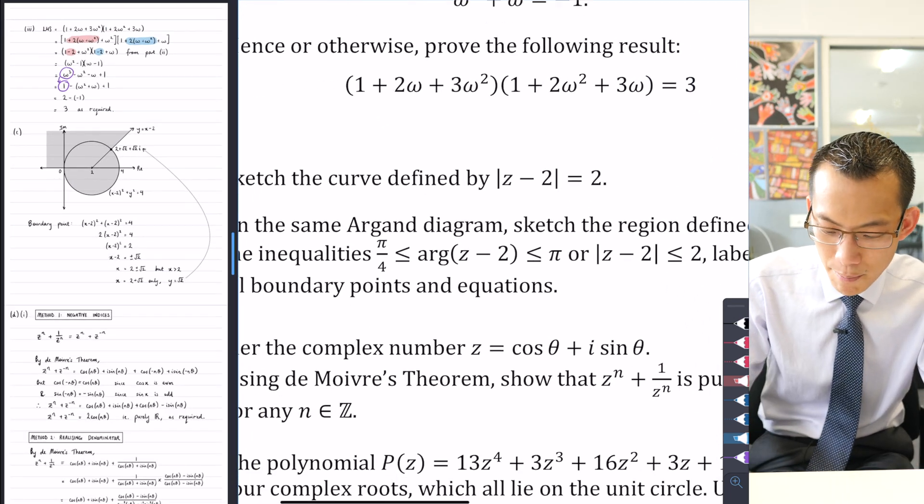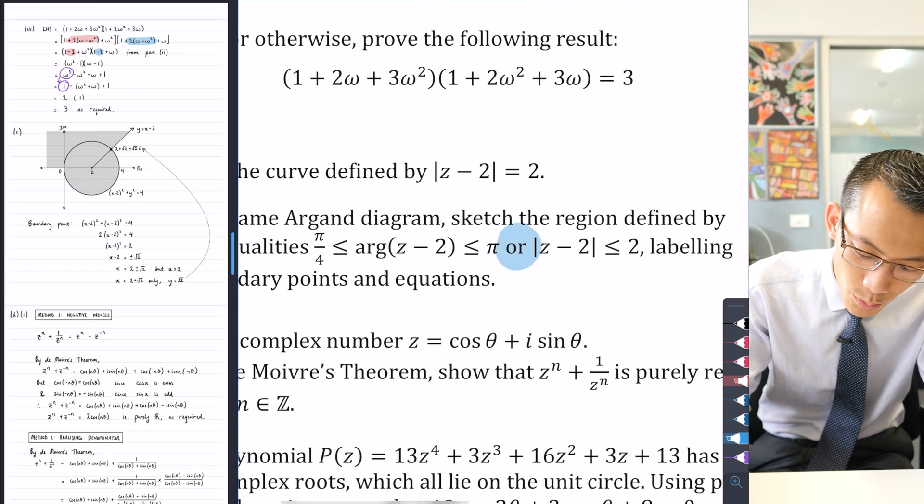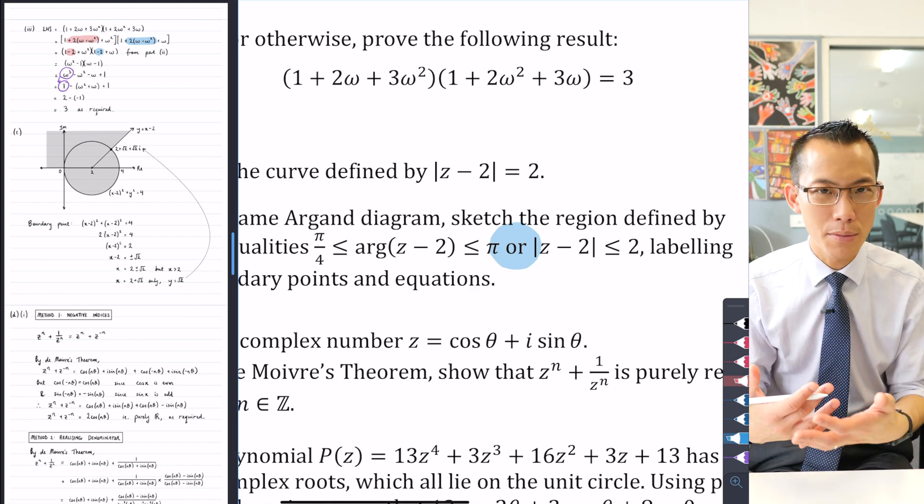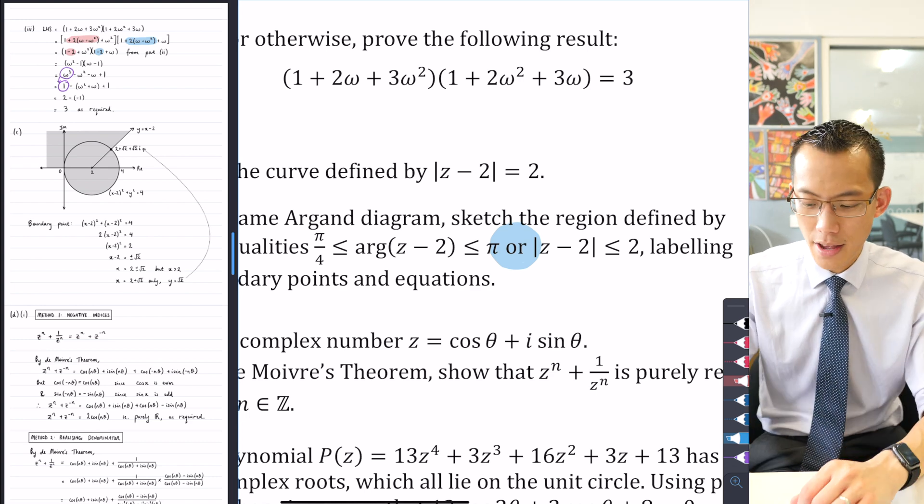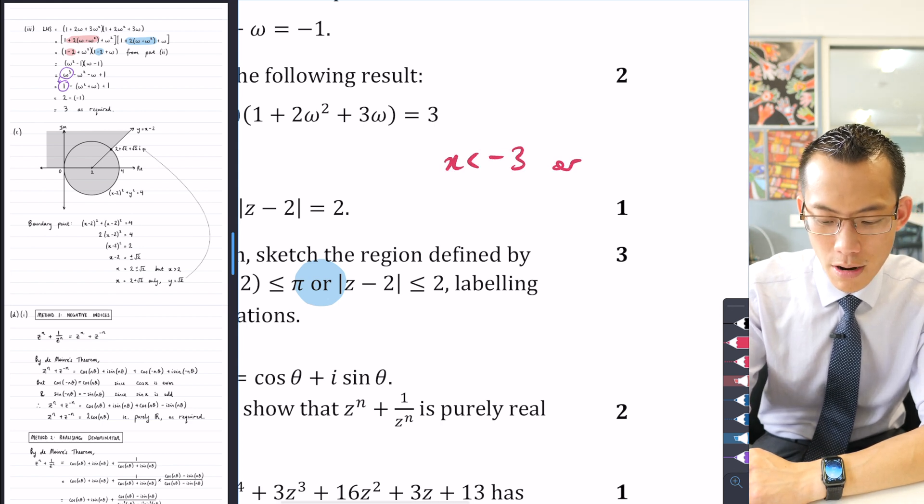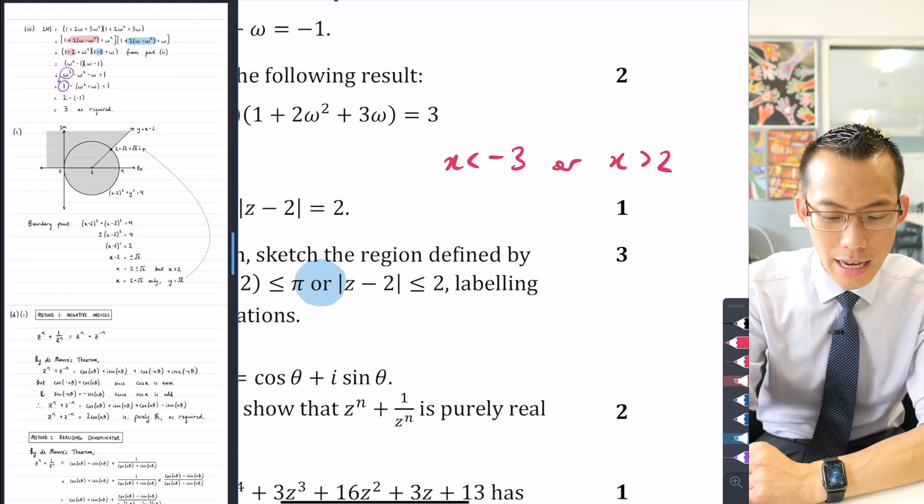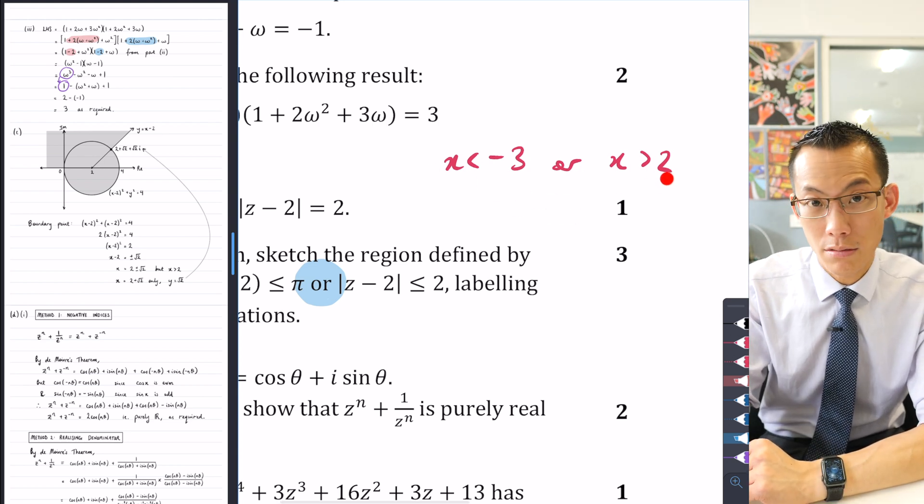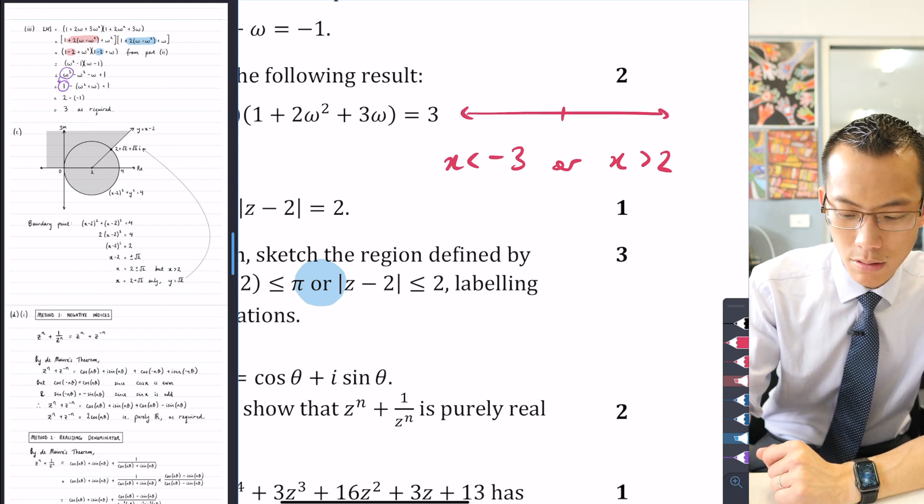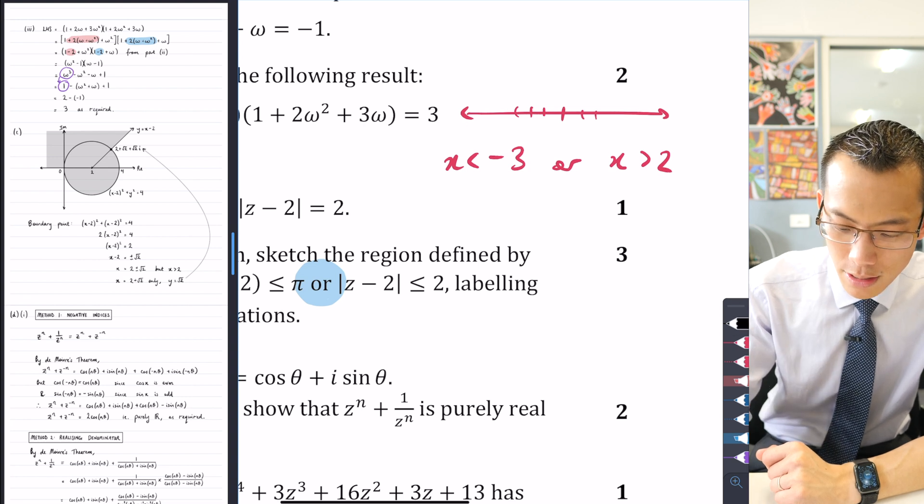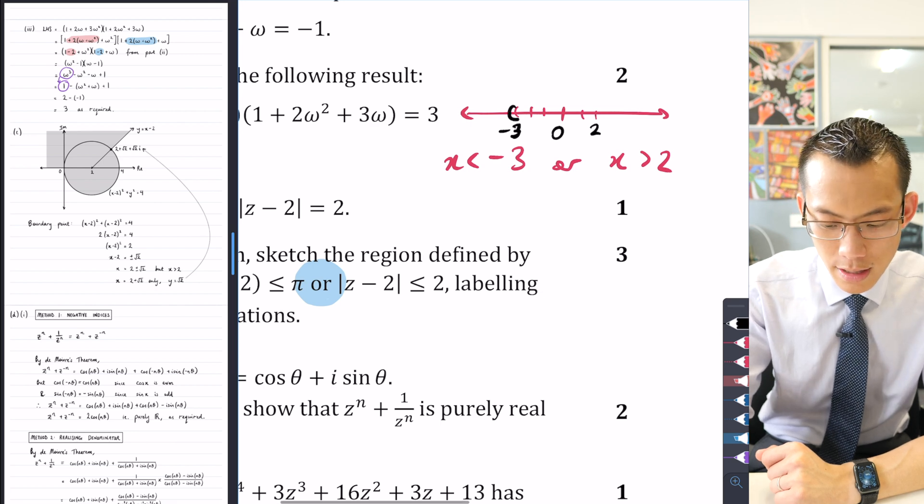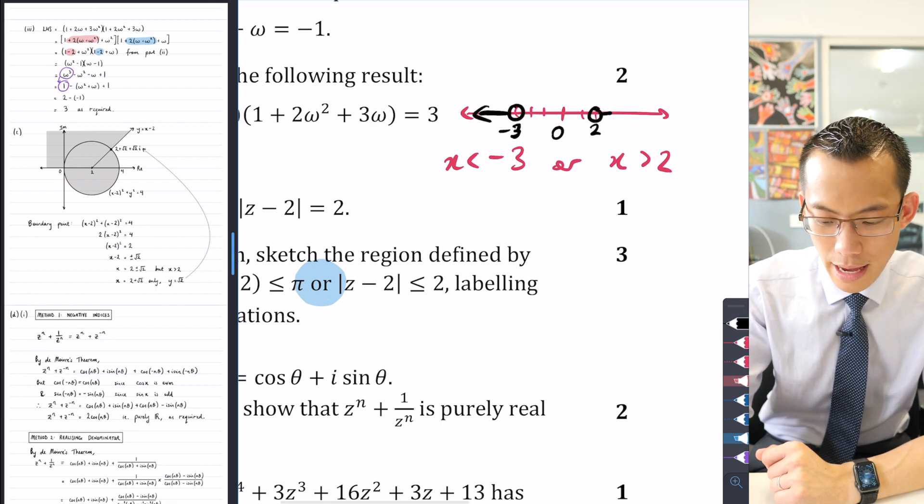Number one, there's a region. Sketch the region defined by these inequalities. Now the key thing that pretty much everyone missed was this word in here. It says 'or'. So 'or' means the union between two sections. If you think back, you know, if you've got a number and I say x is less than negative three or x is greater than two, if you satisfy either one of these inequalities that's fine. So I could put this on the number line like so.